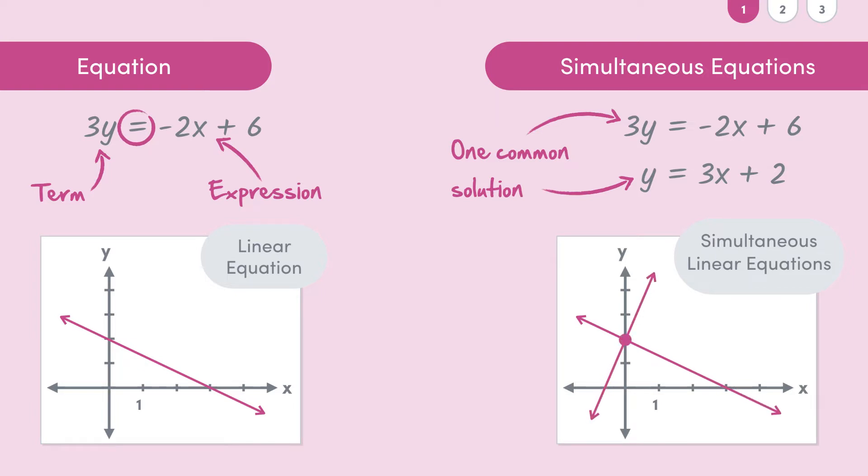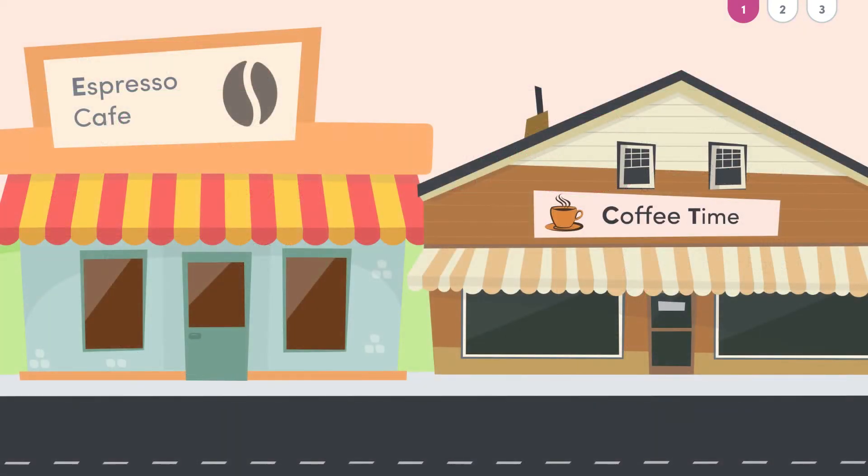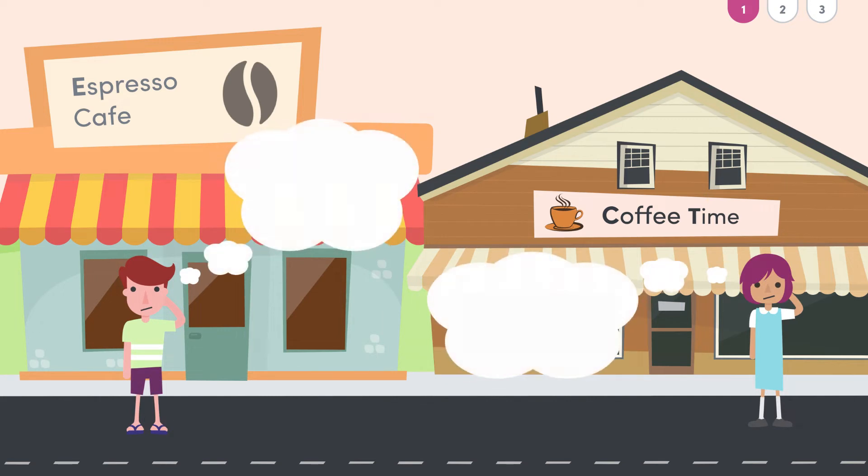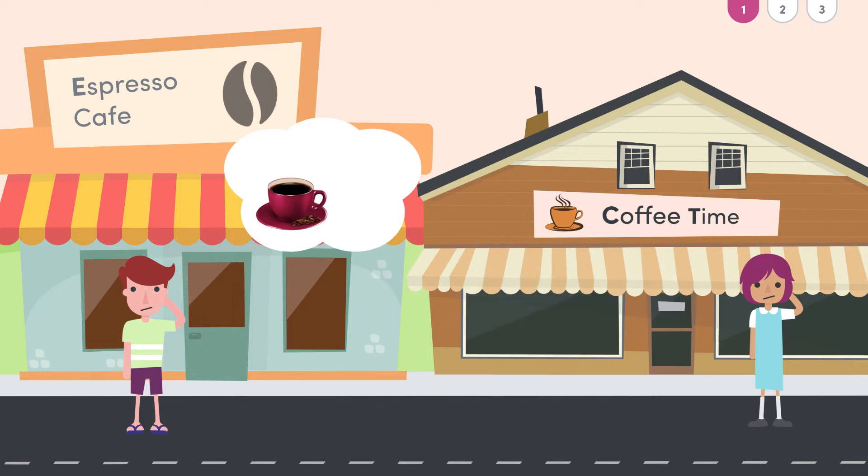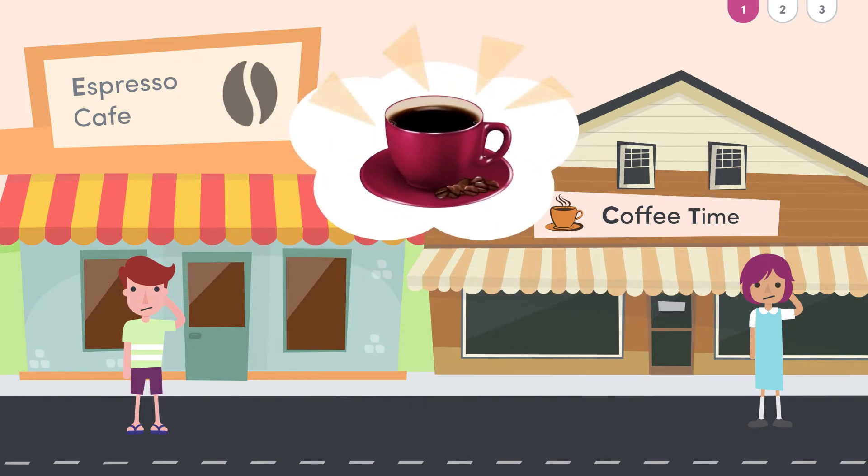This is kind of like comparing two different cafes. They may have completely different menus which you can order off, but both will have coffee. So in this case, coffee is a common solution between these two cafes. But I mean, we all knew that coffee is the solution to everything anyway, so I don't even know why I bothered with this analogy.